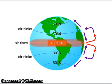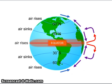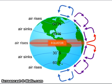At about 60 degrees north or south, the air flowing towards the poles collides with cold air moving away from the poles. The collision of these two air currents forces air upwards, where it moves back towards the poles and the mid-latitudes. This three-celled model gives rise to the cells known as the Hadley, Ferrell, and Polar cell, respectively.